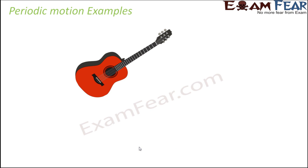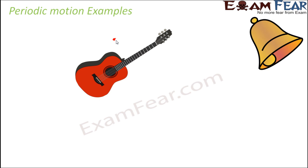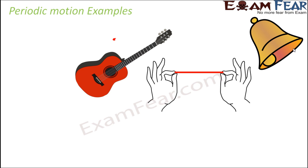Many musical instruments exhibit periodic motion. Think of a guitar — as soon as you pull the string of a guitar, it starts vibrating. If you have a guitar, pull a string and leave it, and you will see it vibrate — that motion is periodic motion. Think of a school bell or Christmas bell: as soon as you strike it on one end, it keeps moving back and forth. That is also periodic motion.